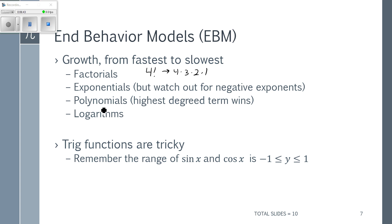Polynomials are the easiest to work with, and you did a version of this in Algebra 2 when finding horizontal asymptotes of rational functions. With polynomials, it doesn't matter whether we have positive or negative signs — the highest degree term wins. Then the slowest growing functions are logarithms; if you see a logarithm, it's probably going to get dropped when X is going to positive or negative infinity. Trig functions are tricky — the AP exam typically only uses sine or cosine for limits as X goes to positive or negative infinity, because the range for sine and cosine is always between -1 and 1.